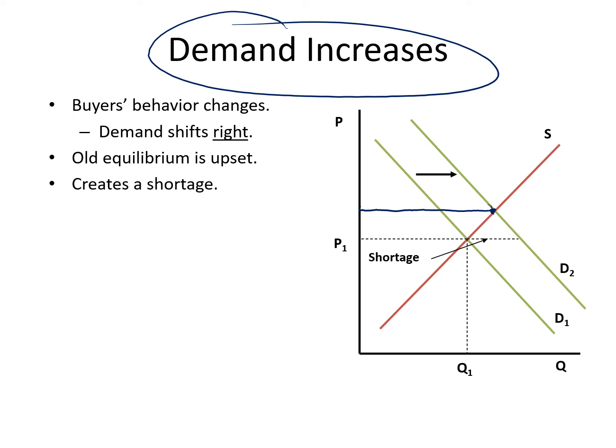At that new intersection point there was a shortage, so the price needs to increase. The market price rises from P1 to P2. The increase in price is the signal to producers to expand or extend their supply of the product from Q1 to Q2.